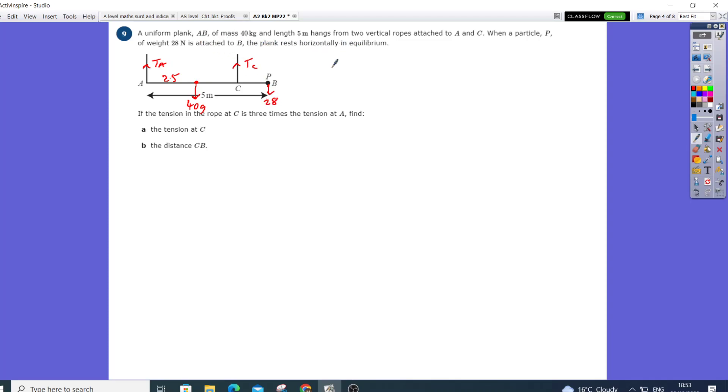The system is at rest in equilibrium. We need to find the tension in C, where tension in C is three times the tension in A. So we've got TA plus TC equals 40 times 9.8 plus 28.